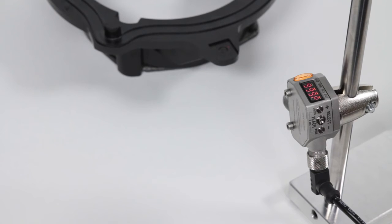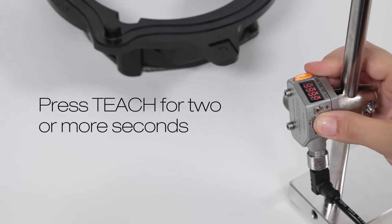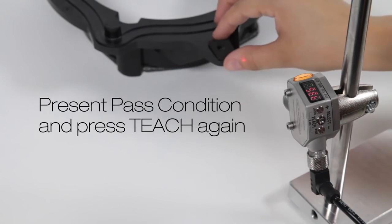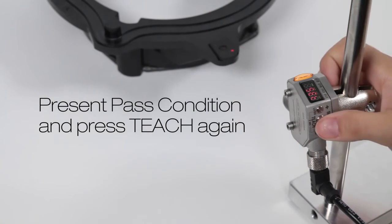For this example, a correctly seated spacer on an automotive speaker case is presented in front of the sensor and the teach button is pressed for two or more seconds. After another click of the button, the Q4X learns this as a reference condition and looks for changes in either height or amount of returned light.